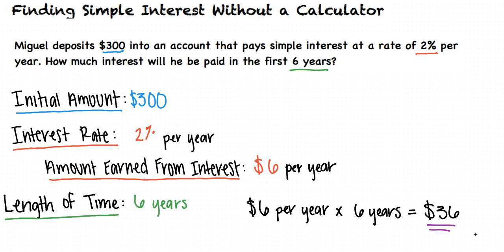This answers our question as it tells us how much interest Miguel will be paid in the first 6 years if he deposits $300 into an account that pays simple interest at a rate of 2% per year.